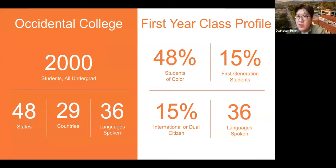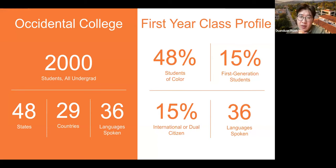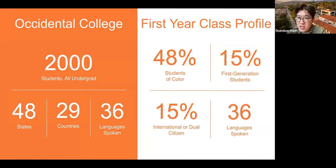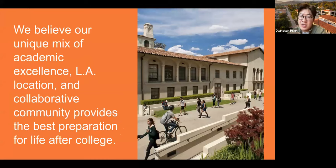Oxy has 2,000 students — all undergraduate. We have no grad students. Students come from 48 states, about 29 countries, and 36 languages are spoken among our student population. We have 48% students of color, getting close to a majority, which matches Southern California's demographics. Our first year class includes 15% first-generation students and 15% international or dual citizens. We're the only liberal arts college in Los Angeles City, which is a key differentiator from our peers.